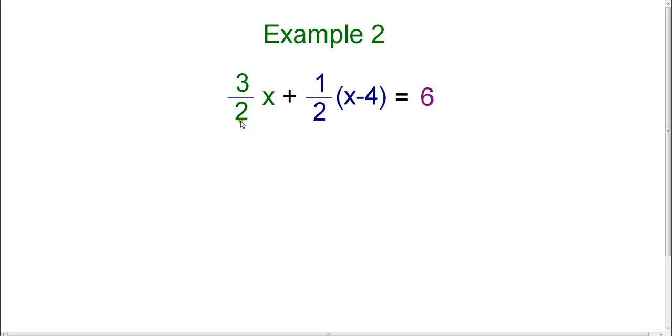So 3 halves x here in green is one term. 1 half times the quantity x minus 4, this entire blue section here is one term. And then of course our answer is a term because it's separated by the equal sign. So we actually have three different terms here.